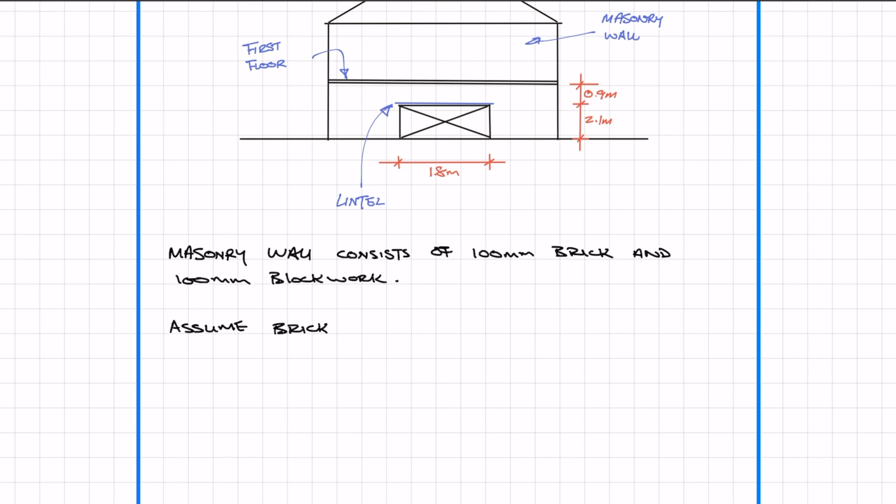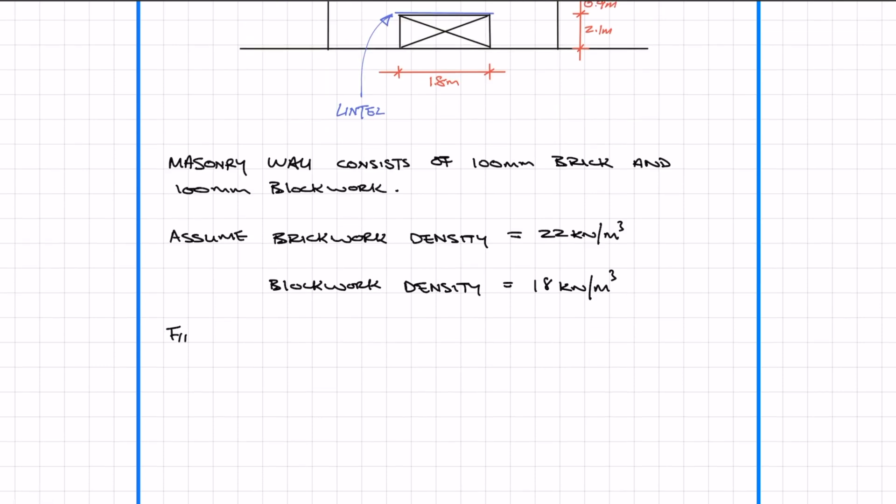We're going to assume that the brickwork is going to have a density of 22 kN per metre cubed and the blockwork density is going to be 18 kN per metre cubed. The timber floor is going to have a dead weight of 0.9 kN per metre squared and a live load of 1.5 kN per metre squared. The timber floor is going to span 4 metres.